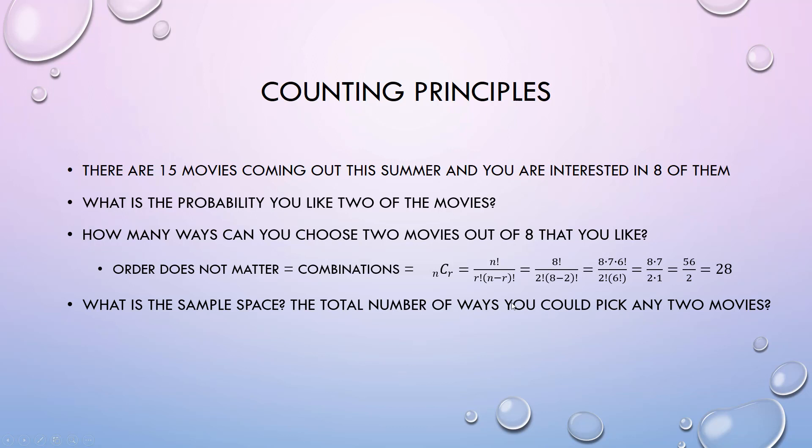What's the total sample space? Well, there's 15 total movies, and once again I'm only going to choose two that I say I like. So I find the total number of ways I could pick any two movies out of the total 15. Then finding my probability, I take my 28 divided by my 105.